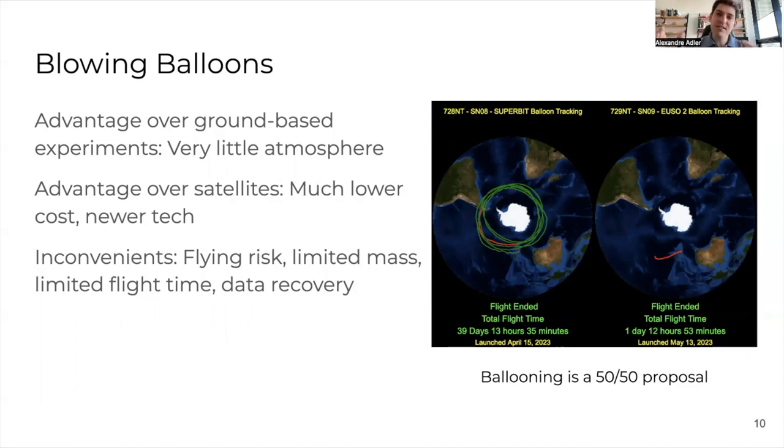So you take your telescope, you attach it to a balloon, you float the balloon up to the stratosphere, then you let it drift with the prevailing winds in the south or northern hemisphere, observe the sky. That should be good. However, there are inconveniences. Ballooning is very much a 50-50 proposal.